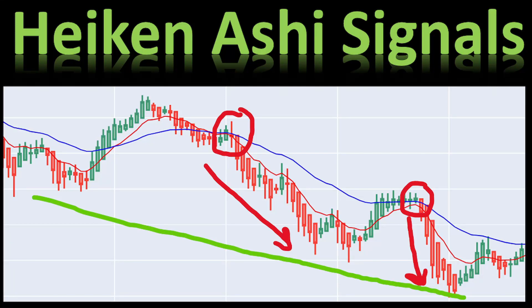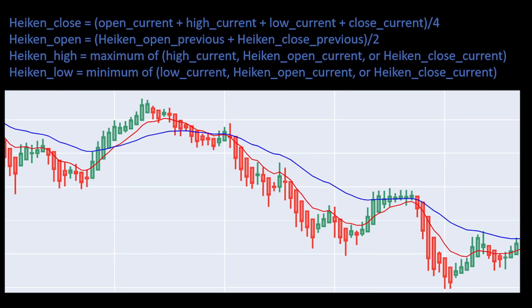Today we will see how to add Heikin Ashi candles in Python and try two related strategies. Heikin Ashi smooth candles are calculated from normal candlesticks that we usually use for trading. Each Heikin Ashi candle is obtained using the following formulas.